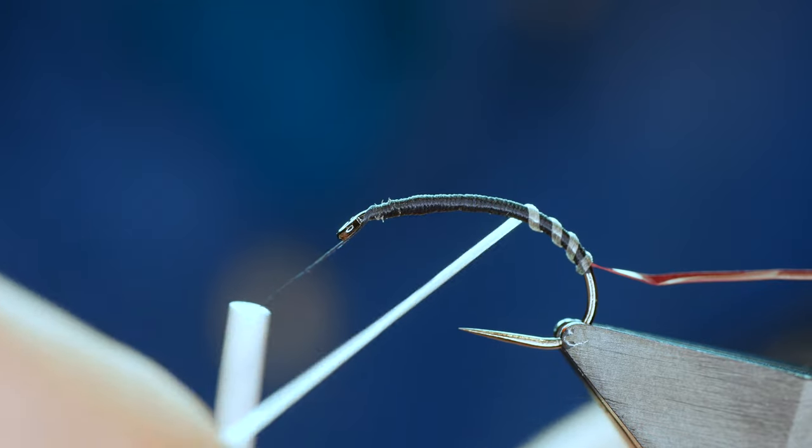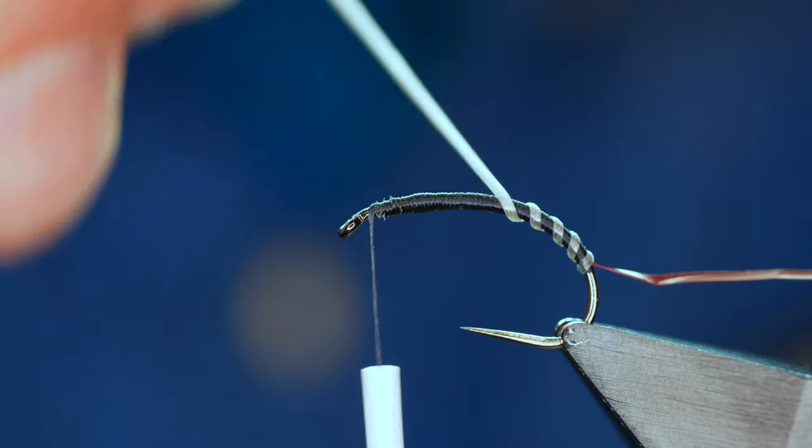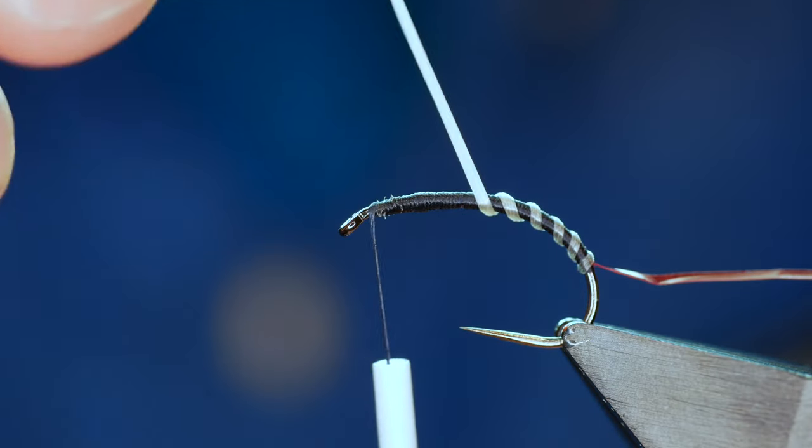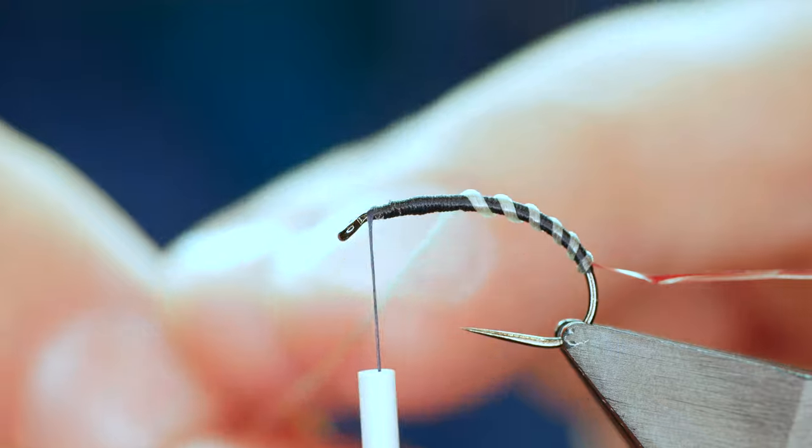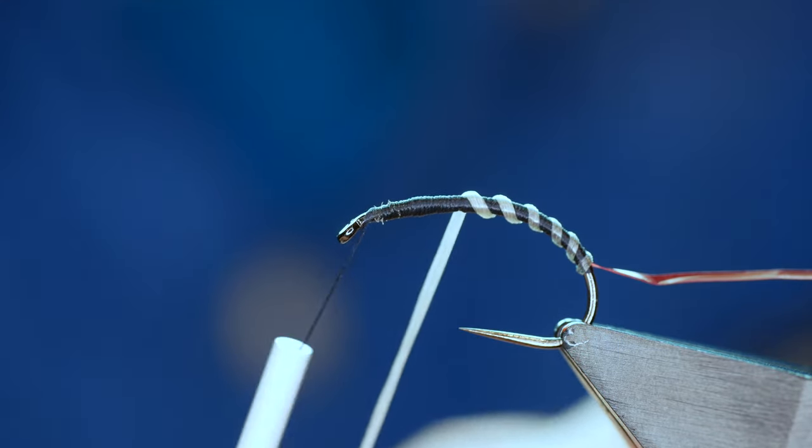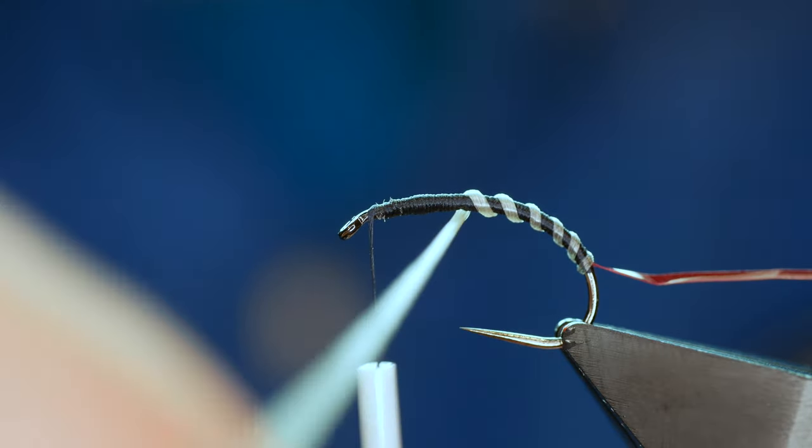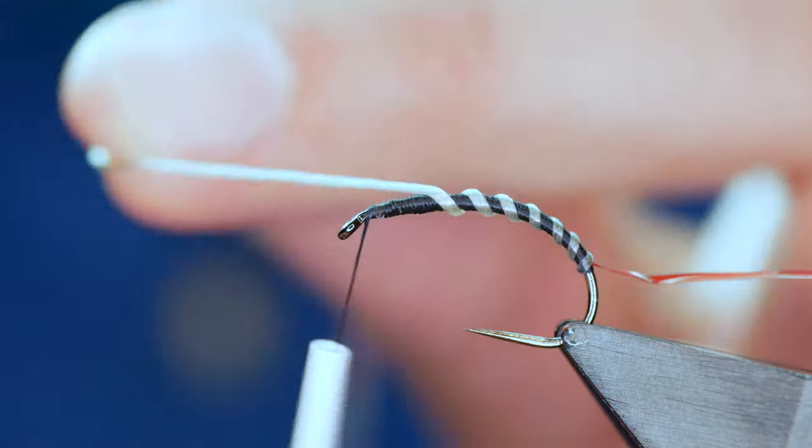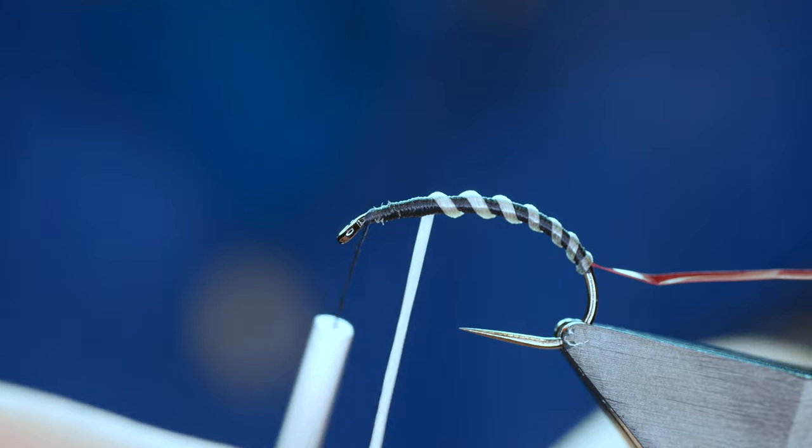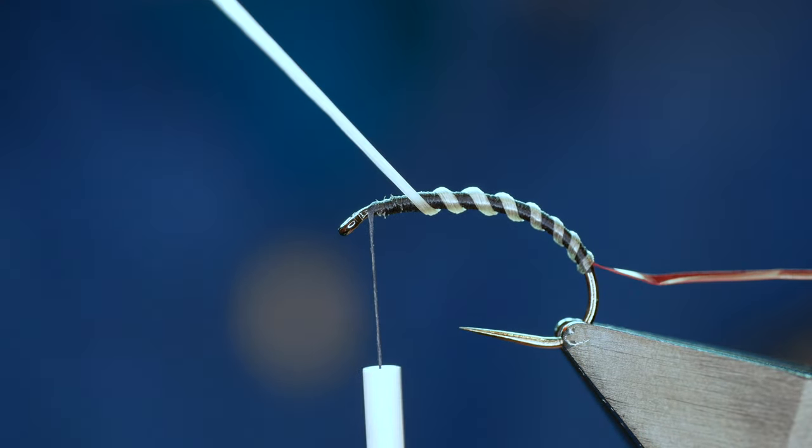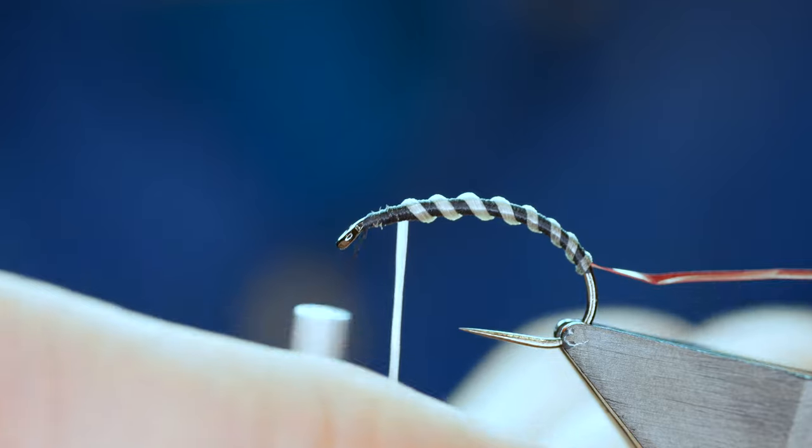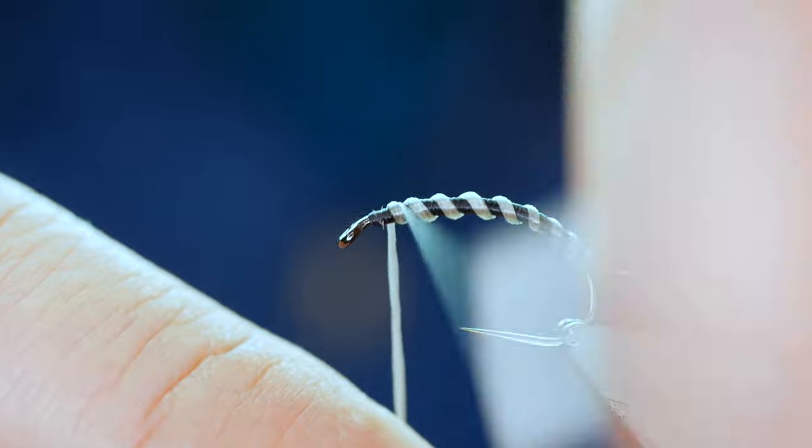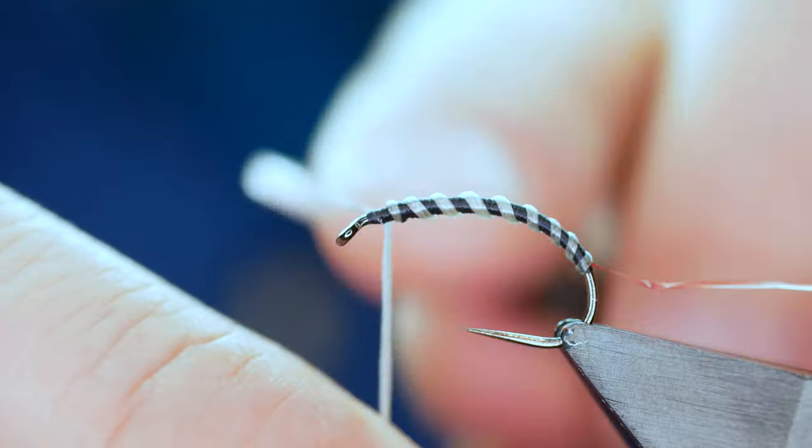Now on the fourth turn I'm going to ease up a little pressure. Not too much but just a little. And then the next turn I'm going to let up a little bit more pressure. And so on and so forth. So what you're getting is that kind of tapered body that the natural has. Bear with me, I'm going to bring that all the way up to the top.